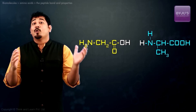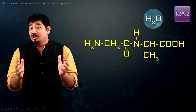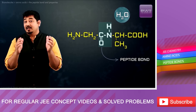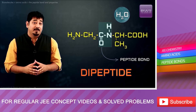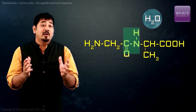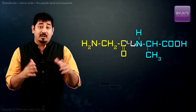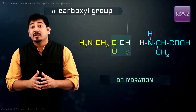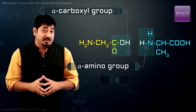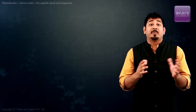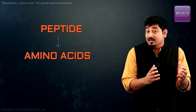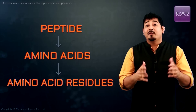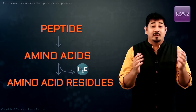Two amino acid molecules can be covalently joined through a substituted amide linkage. This is termed as a peptide bond and it yields a dipeptide. Such a linkage is formed by removal of the elements of water — dehydration — from the alpha-carboxyl group of one amino acid and the alpha-amino group of another amino acid. This is why the peptide is said to consist of not just amino acids but amino acid residues, that is, what is left over after water has been removed from them collectively.